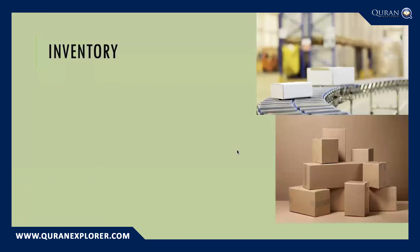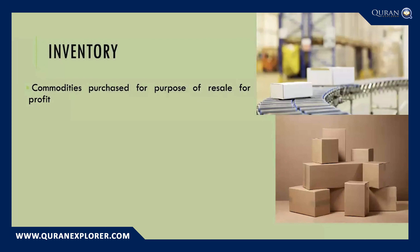Inventory is defined as any commodities that are purchased for the purpose of resale for profit. So if you're in a business and your business is to buy and sell a particular type of good, those goods will be considered as inventory. If you're in a home industry and you buy and sell certain products, those products purchased with the intention of resale will be considered inventory. If you buy and sell vehicles, homes, apartments, or buildings — if that's your business — then that would be considered inventory for your zakat calculation purposes.